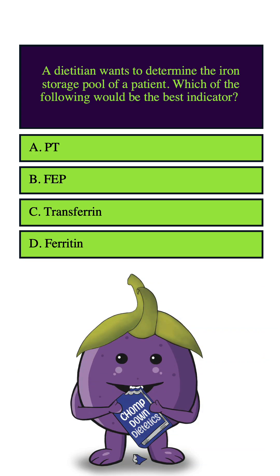Let's highlight 'iron storage pool' and 'best' since those are our keywords. PT stands for prothrombin time, which is not really an indicator of iron storage since it measures the amount of time it takes for blood to clot. So we can eliminate this answer.